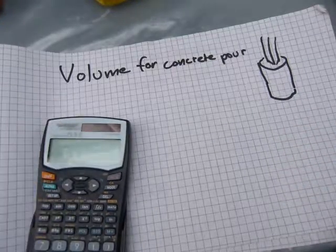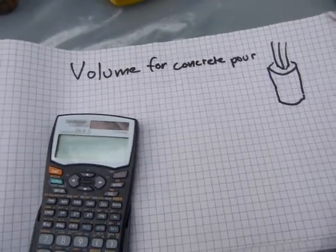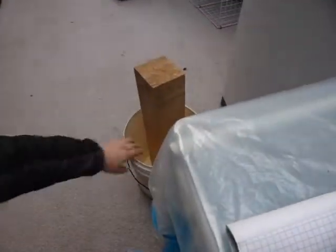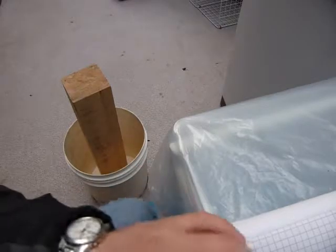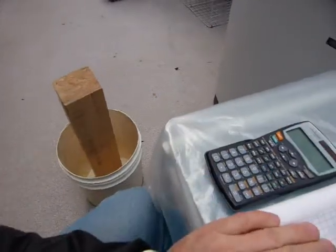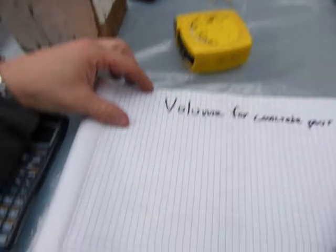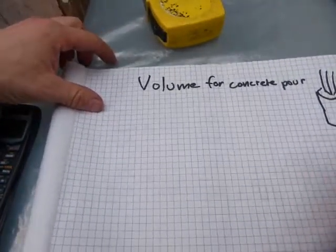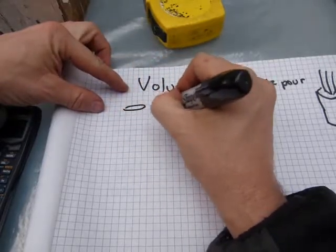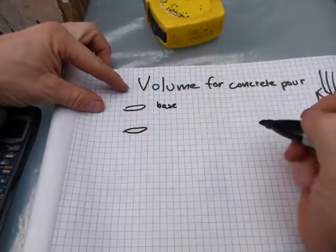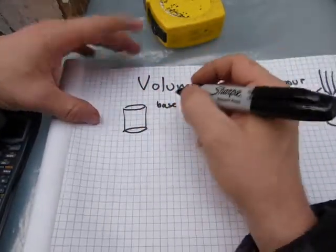Both the cylinder and the deck post are mathematical shapes and they can be calculated easily. They both belong to the family of shapes called prisms. On a prism you have a base and then another base, the two bases are parallel with each other, and you have a height of the shape.